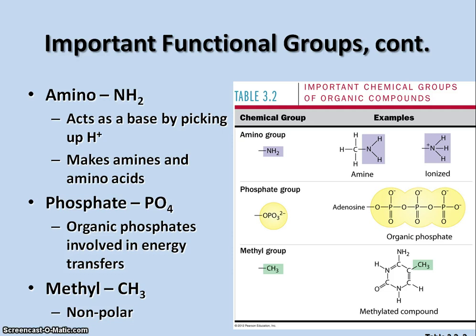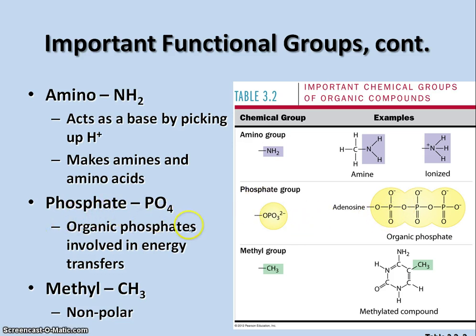The fifth functional group important in carbon compounds is the phosphate group, or PO4. Organic phosphates are involved in energy transfers. The molecule shown here is ATP, the main energy transfer molecule found in living cells. Phosphates are really common in lots of things — you'll find them in various kinds of compounds, including nucleic acids.